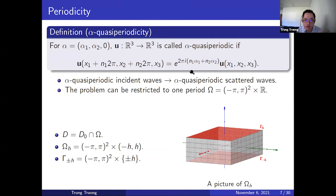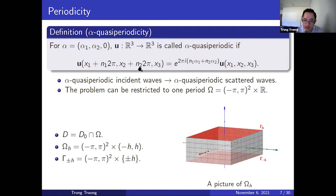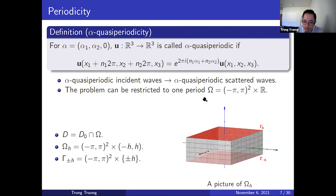Speaking of alpha-quasi periodicity: for alpha, which is a fixed vector in three dimensions with a zero third component, a function u is called alpha-quasi periodic if it satisfies this identity. This is pretty much the same as 2-pi periodicity in x1 and x2; the only difference is this phase shift term on the right. If we use alpha-quasi periodic incident waves, it can be proved that the corresponding scattered waves will be alpha-quasi periodic as well, and therefore our problem can be restricted to one period omega.